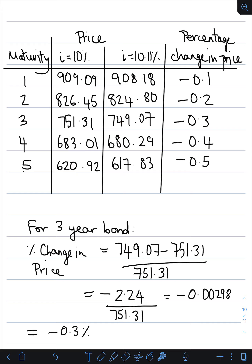You can verify these bond prices using the formulas from the previous video. For example, the two-year maturity bond gives prices of 826.45 at 10% and 824.80 at 10.11%. Also note an important relationship: as the interest rate rises, bond prices drop — you'll see this consistently: 909 to 908, 826 to 824, 751 to 749.